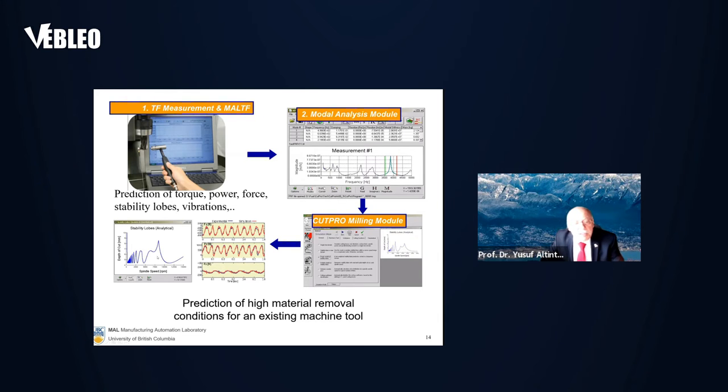Now the engineer can select the best and most productive point, let's say here, and they can simulate force, torque, power, and surface quality, whether it's acceptable or not. If it's acceptable, they can program it on the machine and get on with the production. And this is how it is used in industry.